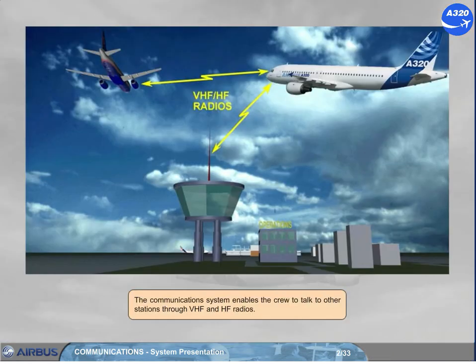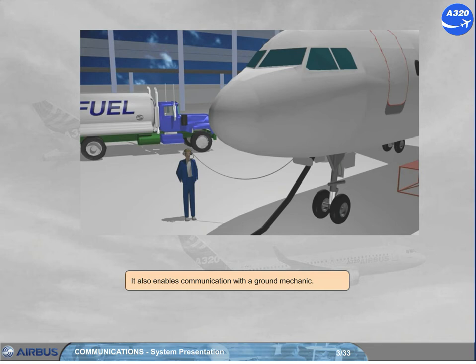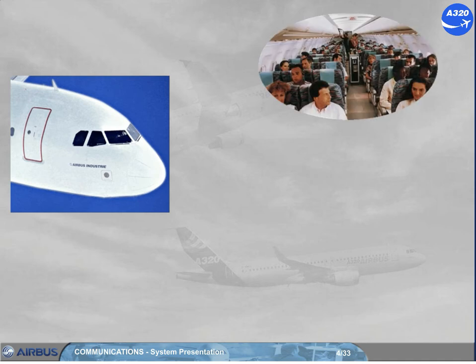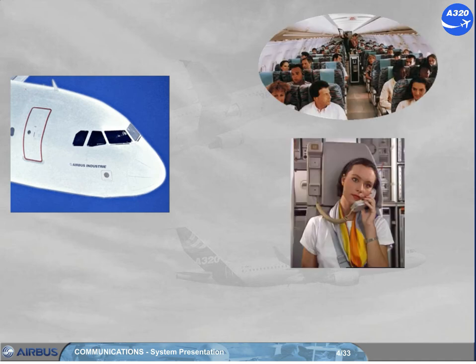The communication system enables the crew to talk to other stations through VHF and HF radios. It also enables communication with a ground mechanic. There are two communication systems from the cockpit to the cabin: the passenger address PA system for passenger announcements, and the cabin interphone system to talk to a cabin attendant.